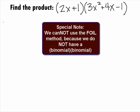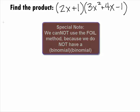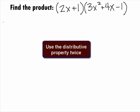Be careful, we cannot use the FOIL method here because we have 3 terms instead of 2 in the second polynomial. However, we will use the basic logic behind that and apply it here. Basically, we will be using the distributive property twice.